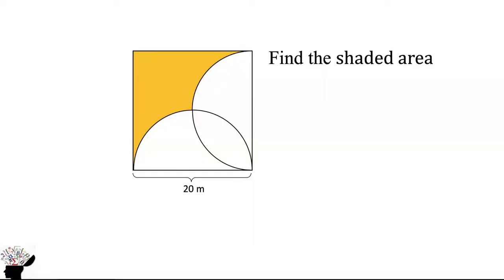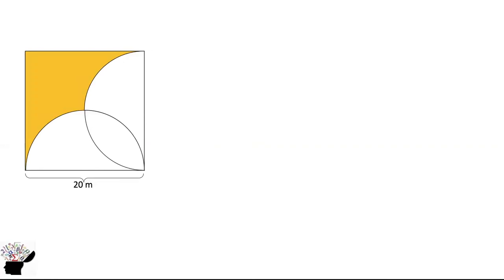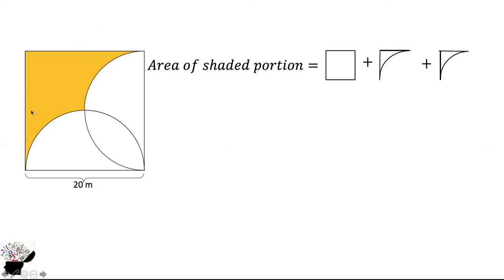Welcome to my YouTube channel. My name is Edwin Wallace. Can you find out the area of the shaded portion? Just think about it for some time. There are many methods of finding the area of the shaded portion for this problem, but in this video I'll just consider two methods. First of all, to find the area of the shaded portion we can find the area of this smaller square. We know that we have two semicircles.